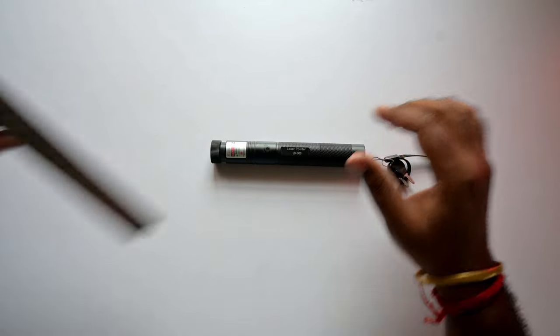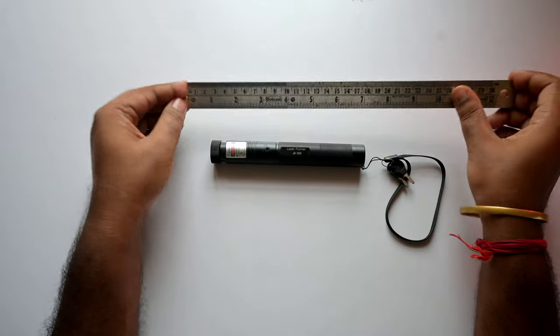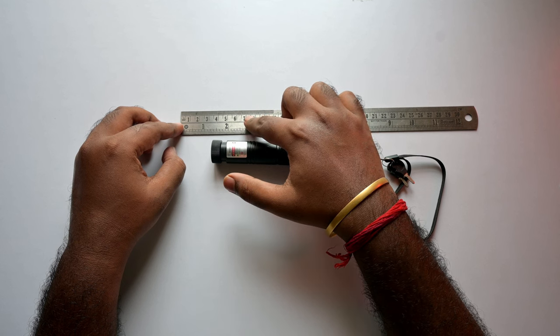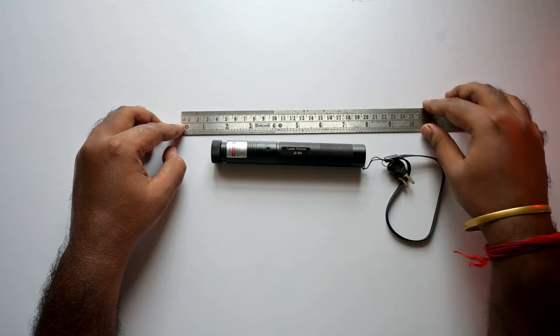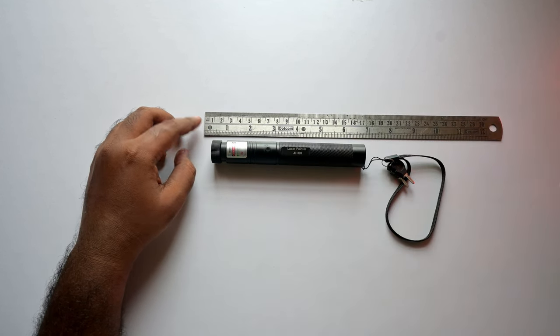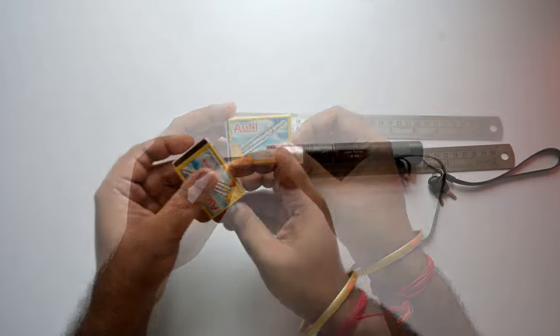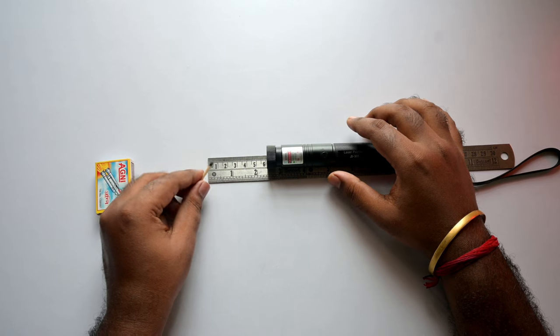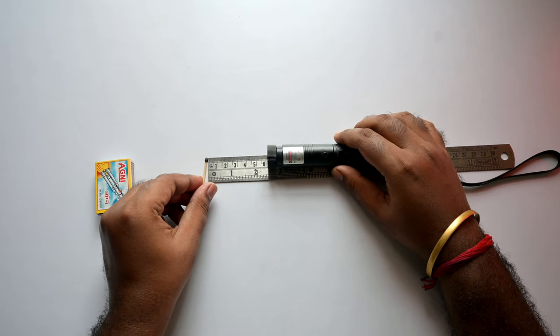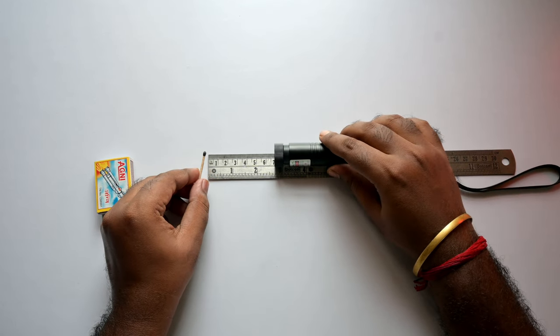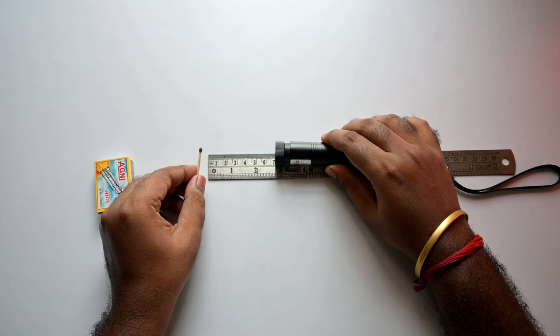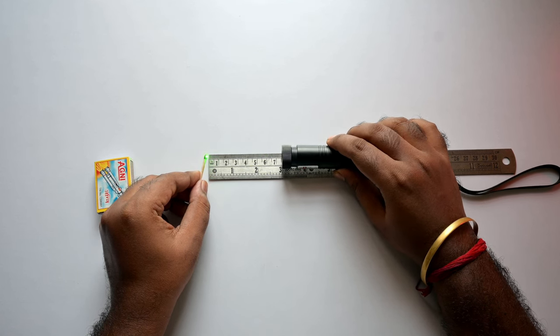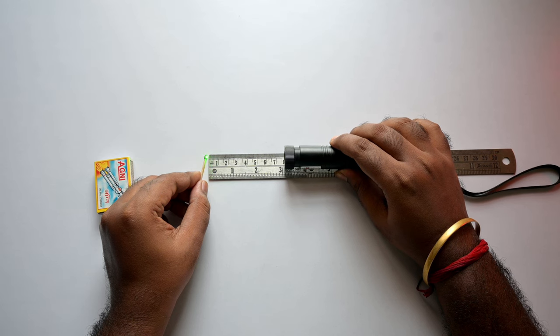Now time for the matchstick. First I take a ruler and measure the correct distance. From 6 to 9 cm, you will get the proper burning focal distance of this laser pointer. Now take out one matchstick and hold it like this. Start pointing on the gunpowder. Slowly move the light until you see the smoke coming out. Hold it for a few seconds and it will start the fire.